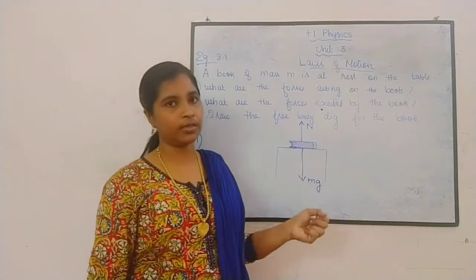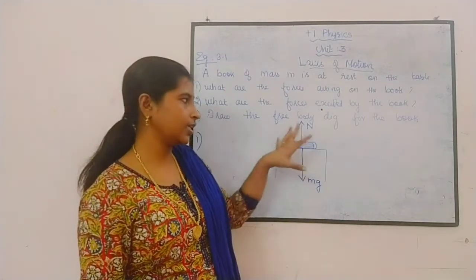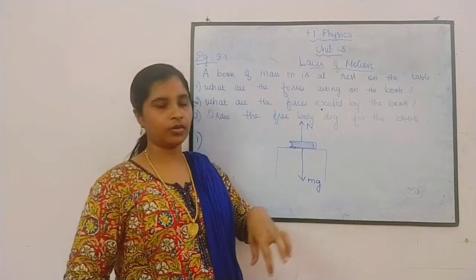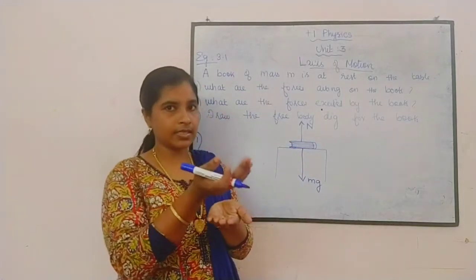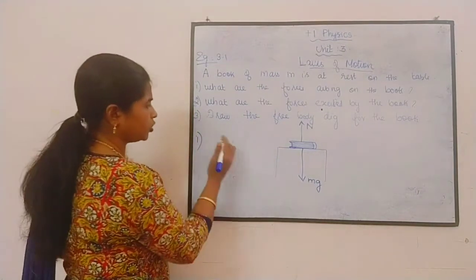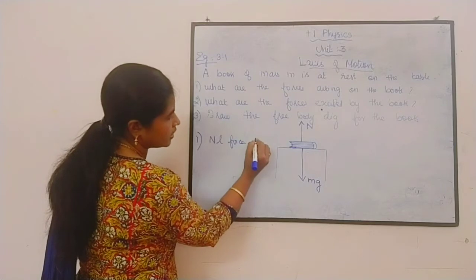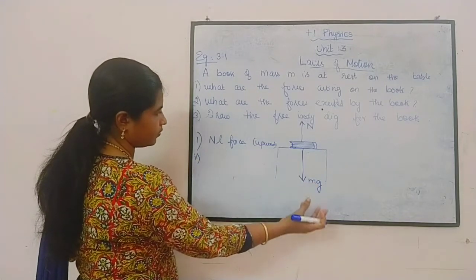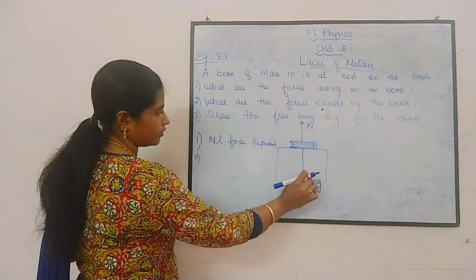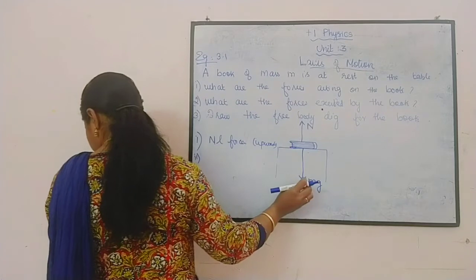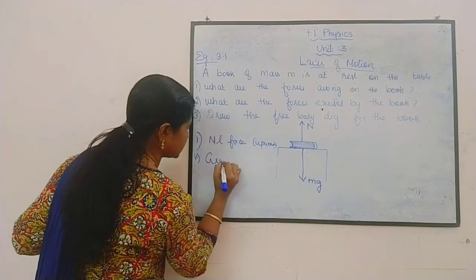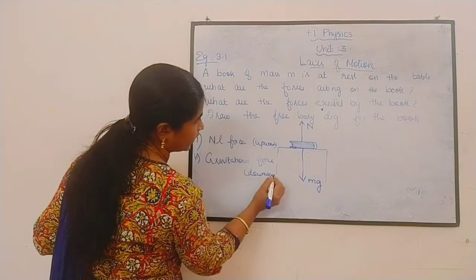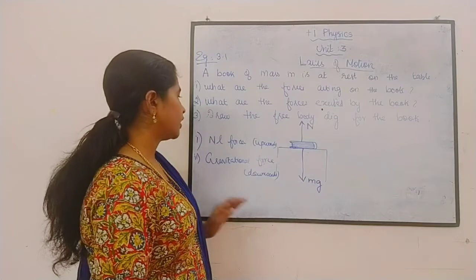So these are the two forces acting on the book. One is the normal force and the other is the gravitational force. The normal force is exerted by the table, acting upward. The gravitational force is the force exerted by the earth, acting downward. This is called the gravitational force, which is written as mg, acting downward. The book remains stationary because these two forces balance each other.